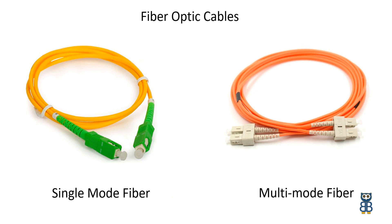Fiber optic cable can transmit data over a long distance at the highest speed — up to 40 km at 100 Gbps. Fiber optic uses light to send data, reflecting light from one endpoint to another. Based on how many beams of light are transmitted at a given time, there are two types: single-mode fiber and multi-mode fiber.